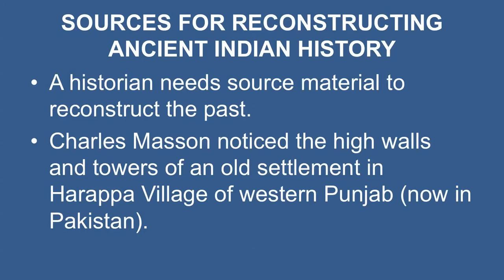Let's start with the first objective — sources for reconstructing ancient Indian history. A historian needs source material to reconstruct the past, but sources themselves do not reveal the past. They need interpretation and the historian makes them speak. In fact, the historian is expected to track the source, read texts, follow clues, ask relevant questions, and cross-check evidences to offer meaningful explanation.